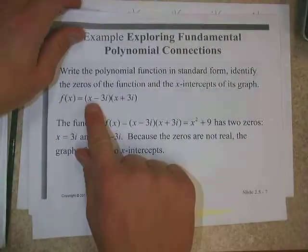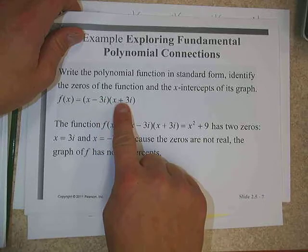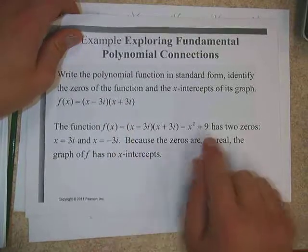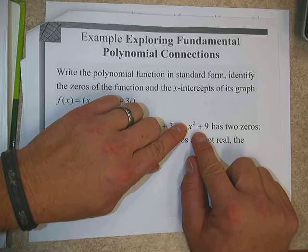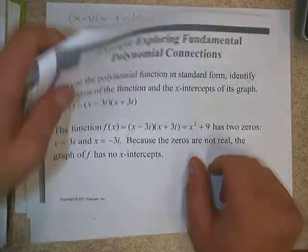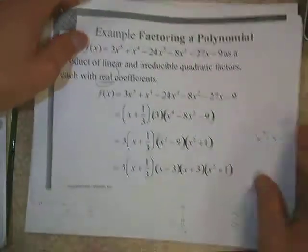The directions you're going to see will ask you to write it as a product of linear and irreducible quadratic factors with real coefficients. When we did the earlier example, x minus i and x plus i are linear factors but they do NOT have real coefficients. So we would stop there — if asked to factor with real coefficients, we would not factor those imaginary linear factors further.